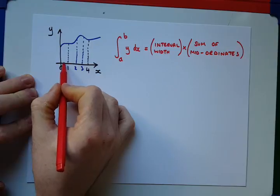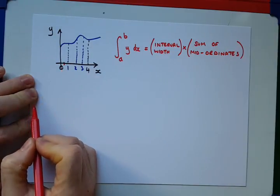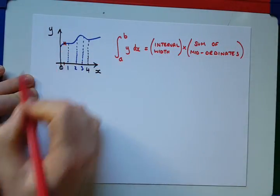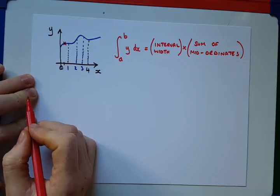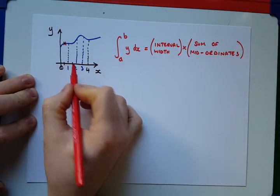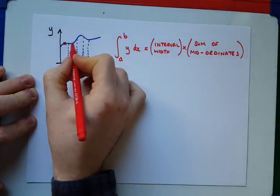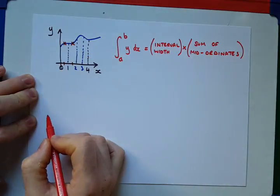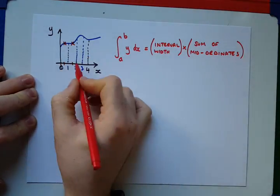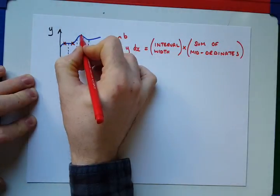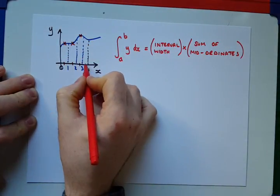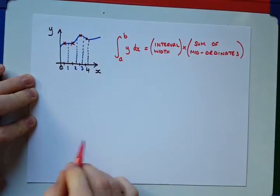Okay, so the midpoint of this interval is x is equal to 0.5. So, we want to find out what the value of y is, at x is equal to 0.5. The midpoint of this interval is 1.5. So, we want to find the value of y at 1.5. 2.5, and the value of y at 2.5. 3.5, and the value of y at 3.5.